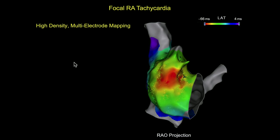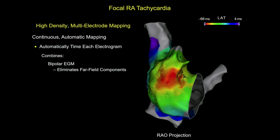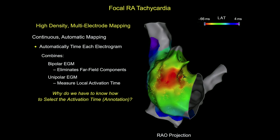Today we have multiple systems that allow high-density multi-electrode mapping. These systems allow us to move the catheter around the chamber and continuously acquire mapping data. In order to do that, these systems have to automatically time each electrogram. They do that by combining information from the bipolar electrogram and the unipolar electrogram. The bipolar electrogram is used to eliminate the far-field components of the signal, and the unipolar electrogram is used to measure the local activation time for each electrode. So the question is, if we have automatic, rapid, high-density mapping, why do we have to know how to select the activation time?